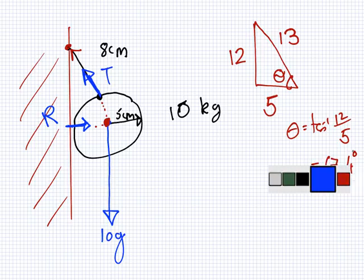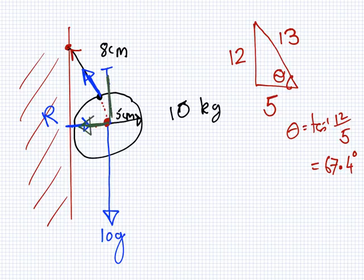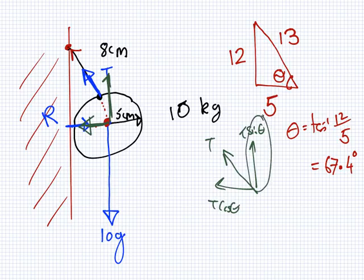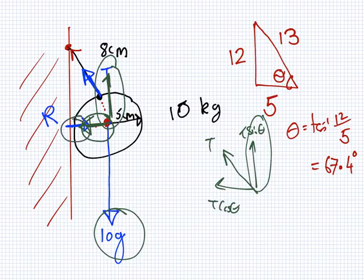57.4 degrees. So the tension T can be resolved into a horizontal and a vertical component — T cos theta and T sin theta. The vertical component T sin theta must equal 10g because they are opposite and it's equilibrium. And the horizontal component T cos theta would equal the reaction R. So we can say T sin 67.4 must equal 10g. That gives T approximately 106 Newtons.